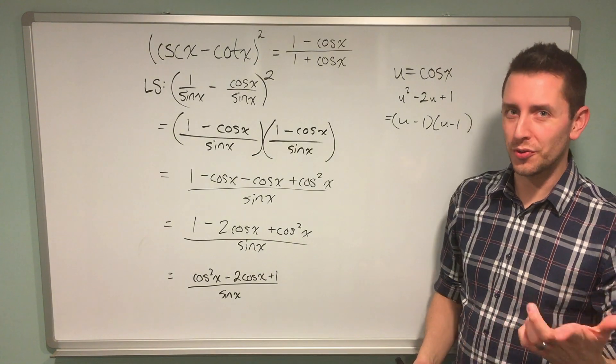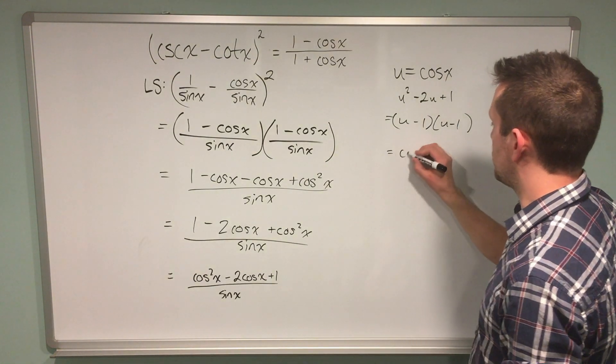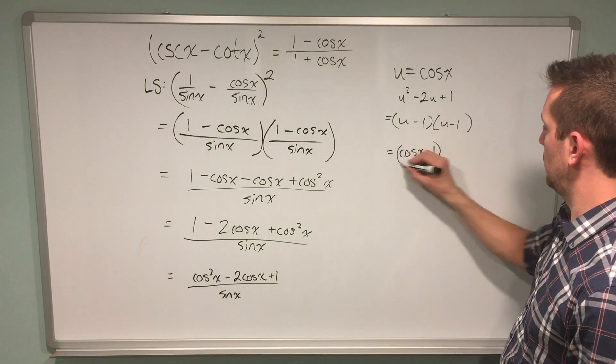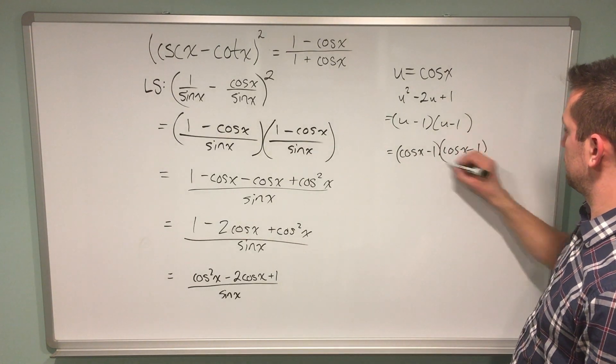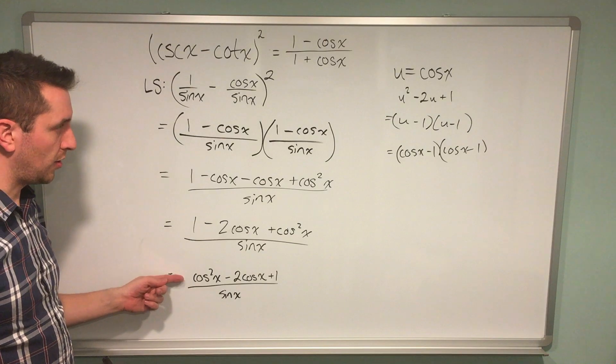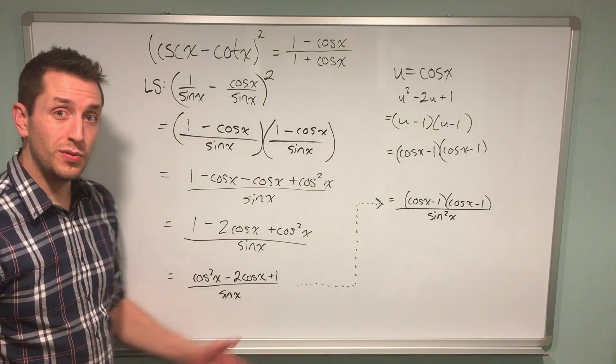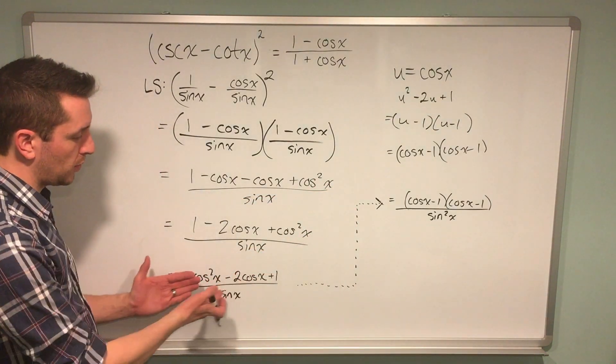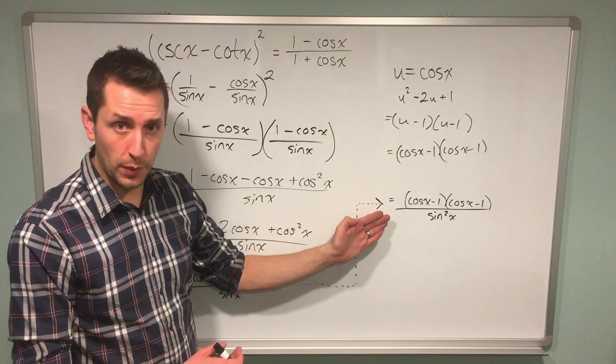However, you'll recall that u equals cos x, so making that substitution results in the following expression. From this, I can conclude that my quadratic expression factors into this. Moving over to this side of the board, you can see I've replaced my quadratic expression with a factored form in the numerator.